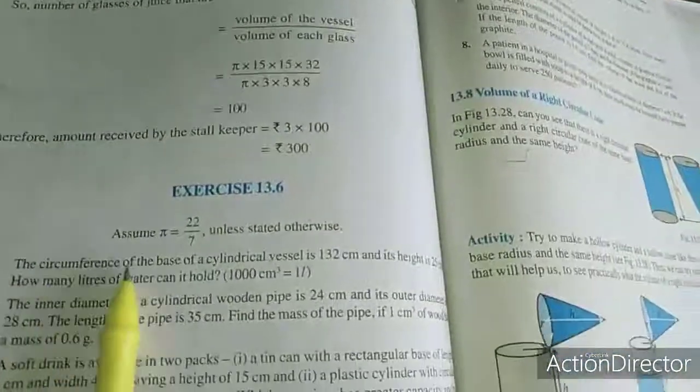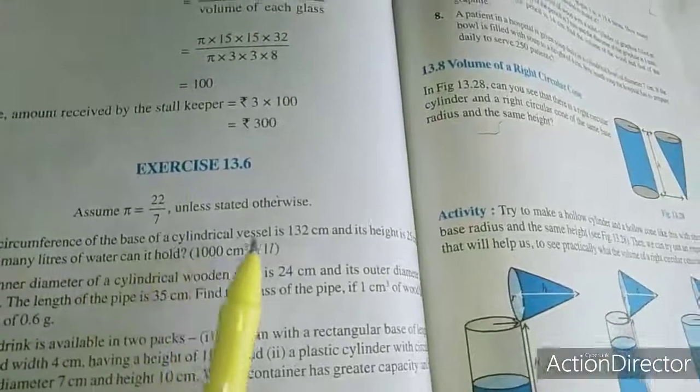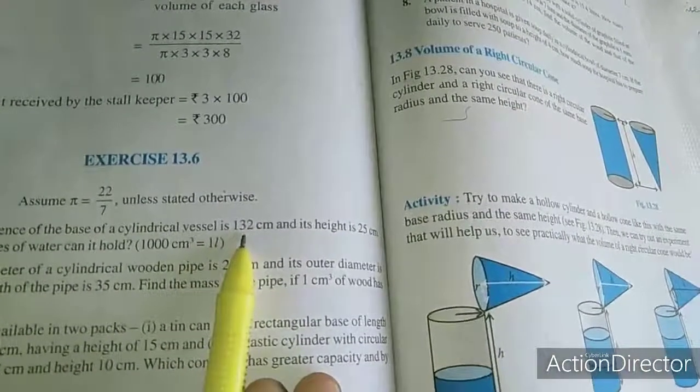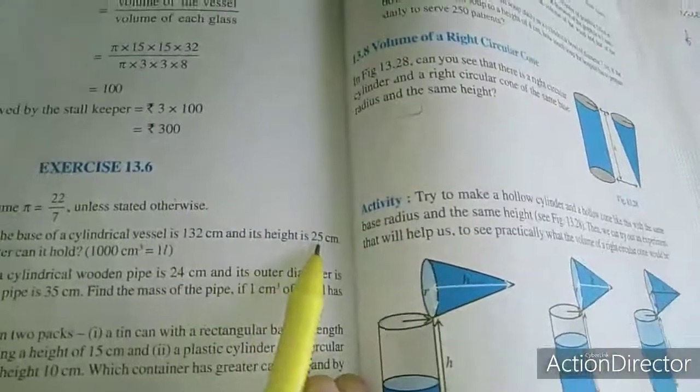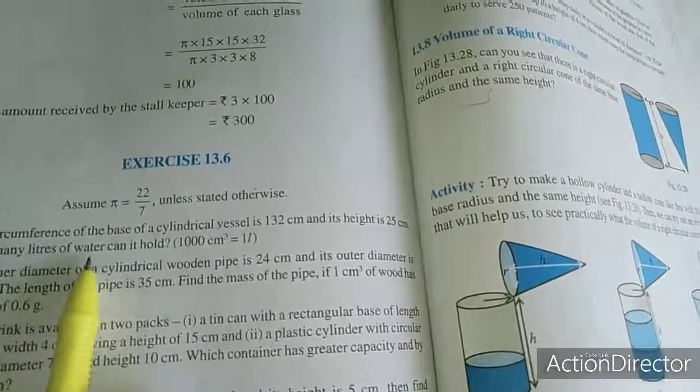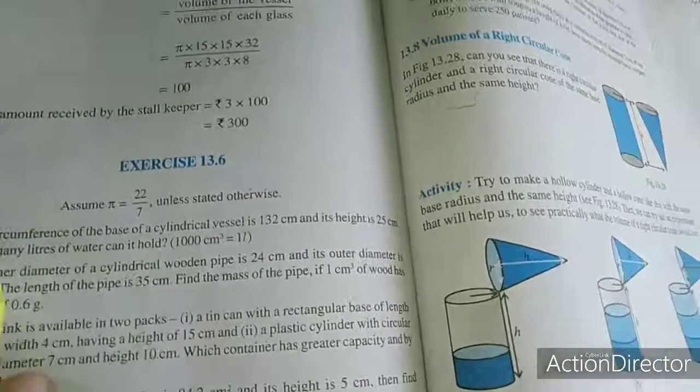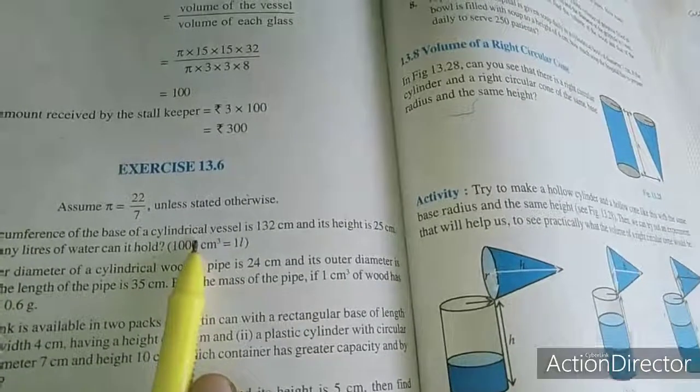First problem: the circumference of base of a cylindrical vessel is 132 centimeter and its height is 25 centimeter. How many liters of water can it hold?